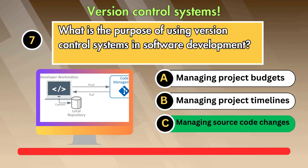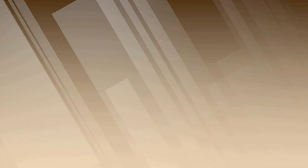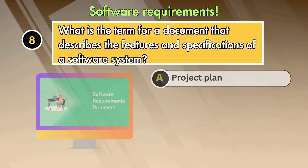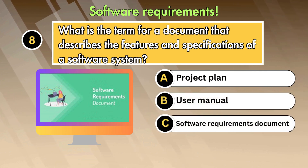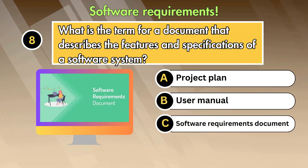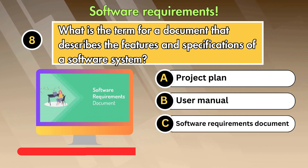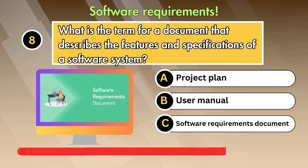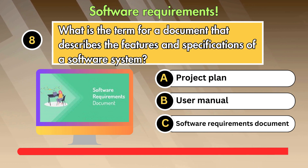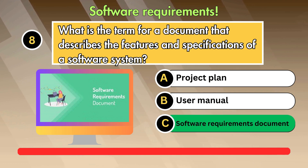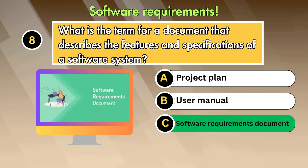Answer is: Managing source code changes. Question 8: What is the term for a document that describes the features and specifications of a software system? Option 1: Project plan. Option 2: User manual. Option 3: Software requirements document. Answer is: Software requirements document.